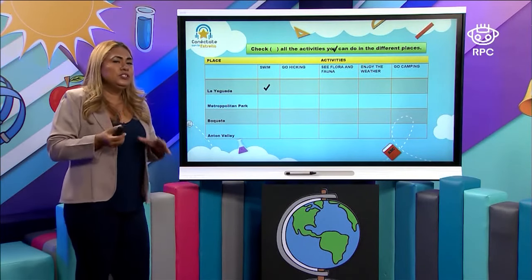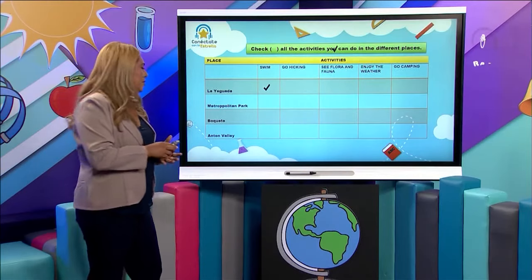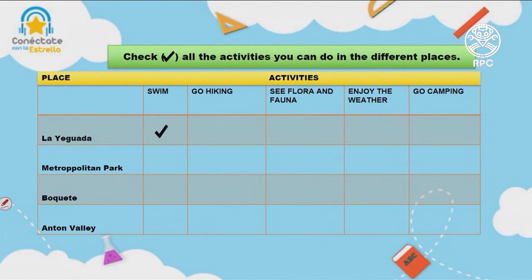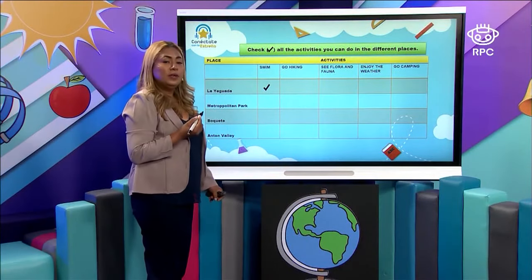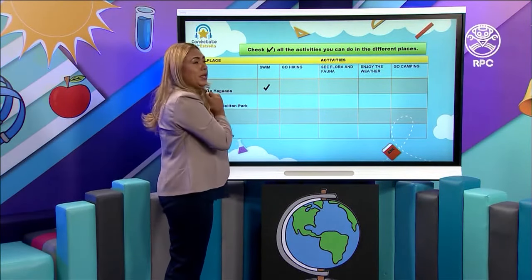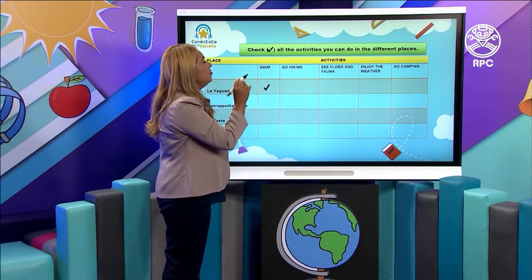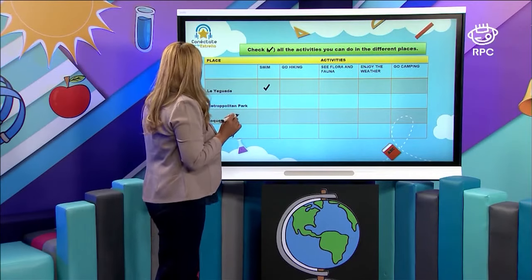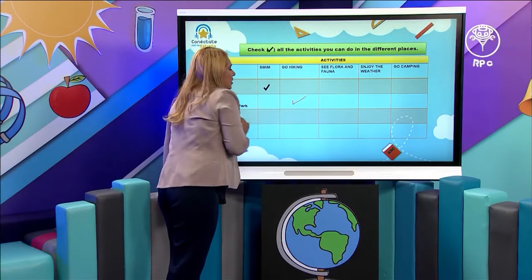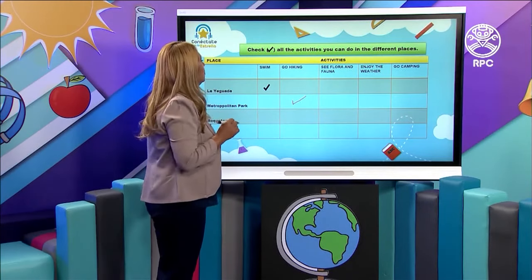Here we have a practice to remember about the reading. Let's check all the activities that we can do in the different places. For example, in La Lleguada we can swim. In the Metropolitan Park, the activities include swim, go hiking, see flora and fauna, enjoy the weather, or go camping. We can go hiking — so that is the place where you check.